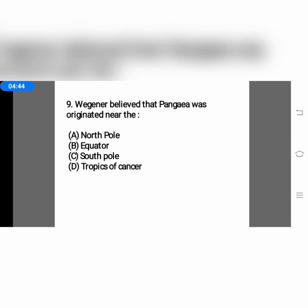The next question: Wegener believed that Pangea was originated near — option A, the North Pole; option B, the Equator; option C, the South Pole; or option D, the Tropic of Cancer. According to Wegener, Pangea originated near the South Pole, near Antarctica. So the correct option is option C.